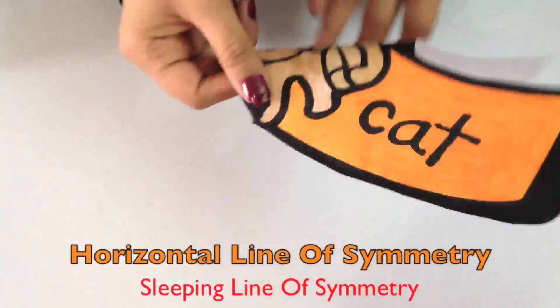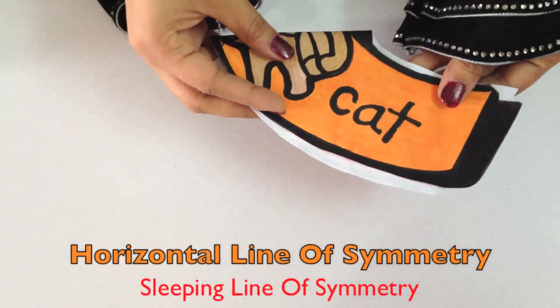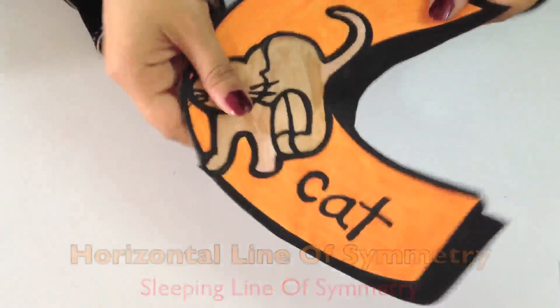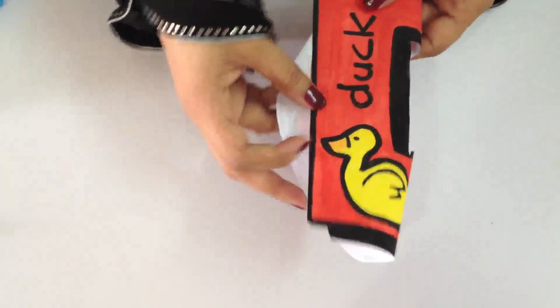The letter C has a horizontal or sleeping line of symmetry. D does not have a vertical line of symmetry.